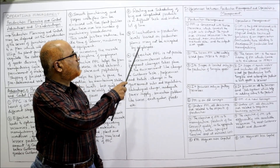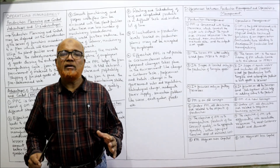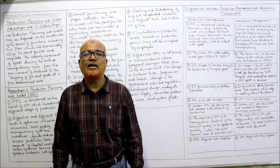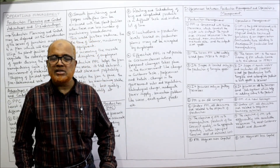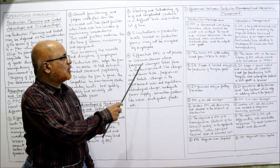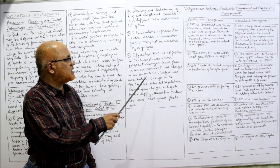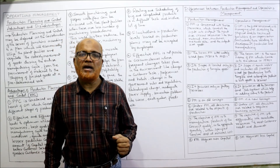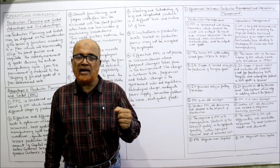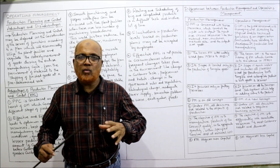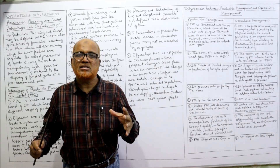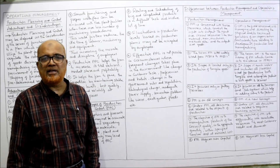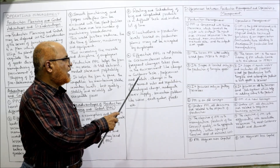The third disadvantage is that fluctuation in production levels based on production plans may not be accepted by employees. If there are frequent changes in the production plans, it will irritate the employees and will not be acceptable to them. Effective PPC is also not possible in circumstances where frequent changes take place in the environment — if there are changes in market demand, market competition, market tastes, fashions, and preferences of customers, a dynamic environment affects PPC.